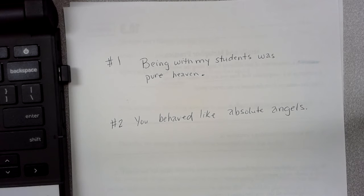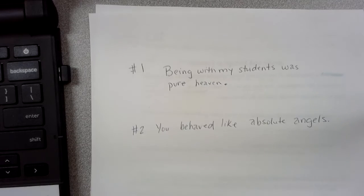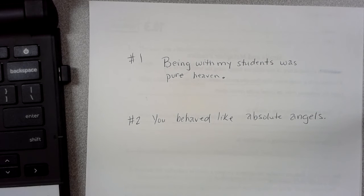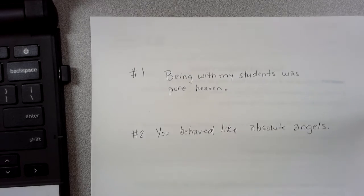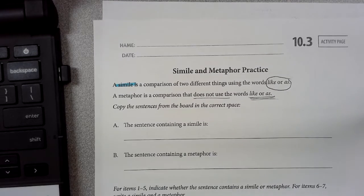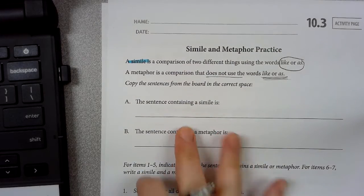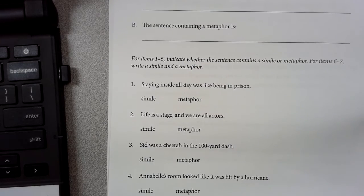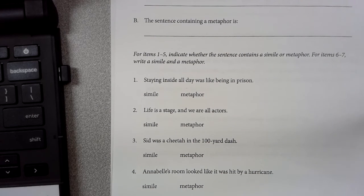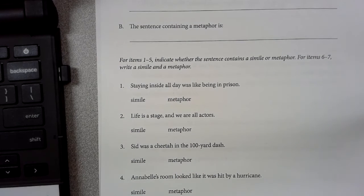So pause the video and write down your answers to see where that goes. Remember, a simile uses like or as to compare. A metaphor does not—it gives you a comparison without using like or as. Okay, you should have written down your sentences on the paper. So I'm going to move ahead to numbers one through five. It says indicate whether the sentence contains a simile or metaphor. For items six through seven, write a simile and metaphor.